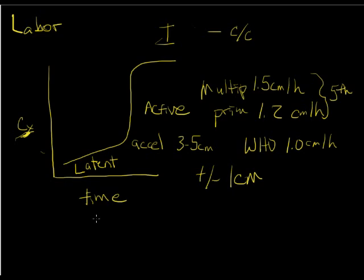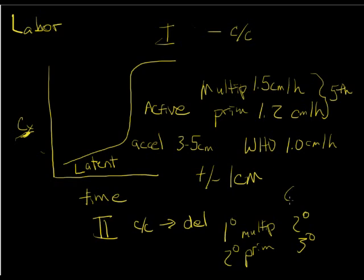Stage two of labor, the onset of that is complete dilation until delivery. The duration of that is expected to be one hour in a multip who does not have an epidural, two hours if they do, and then two hours in a primip without an epidural, and three hours if they do.